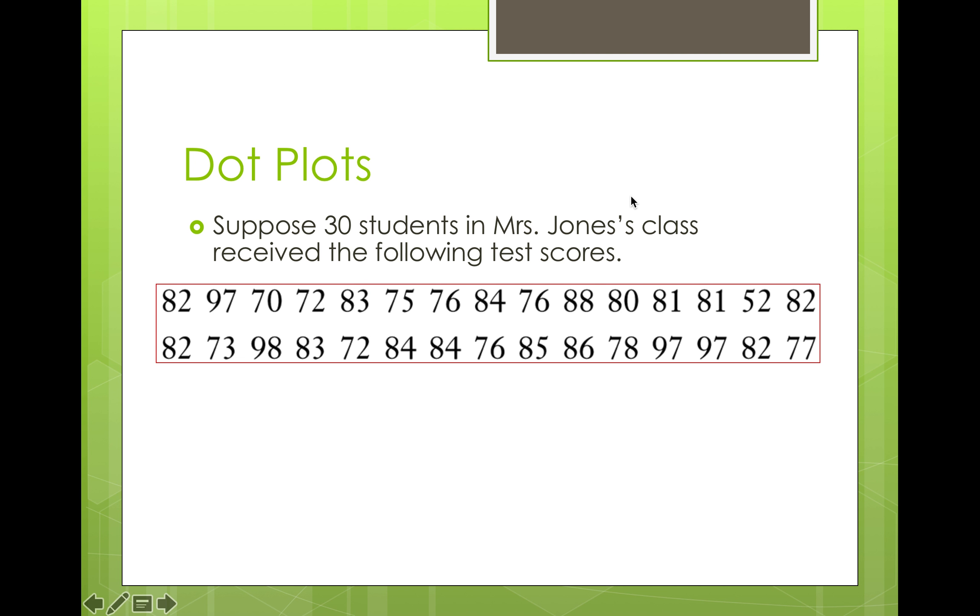Another type of display we have is called a dot plot. And sometimes you'll see these called other things. Sometimes you'll see them called line plots instead of dot plots. But they're going to be the same thing. So we've got these 30 students in this data here. We're test scores. We're going to create this dot plot.